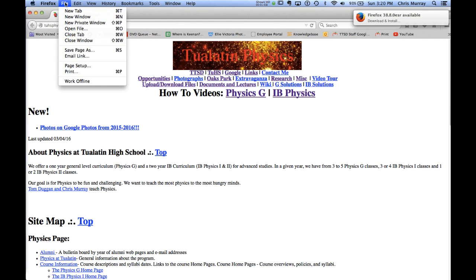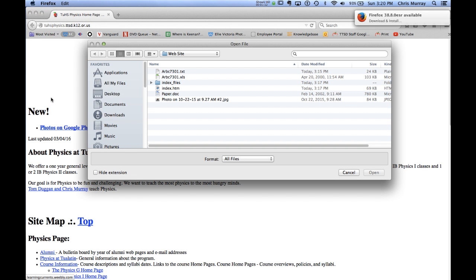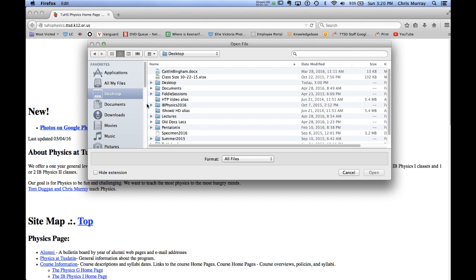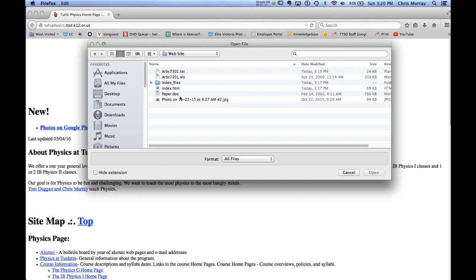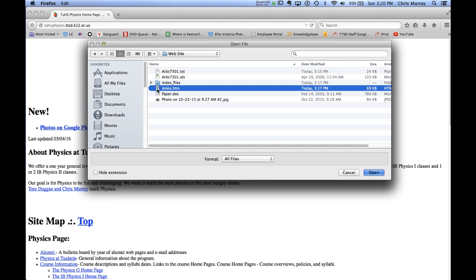Okay. So we're going to go file. Then you have to say open file. You've probably never done this before, but now's your chance, right? And then browse to where your website is. This one's on the desktop. So I'm going to go to my file.